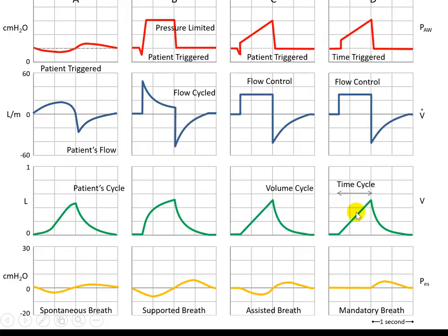The same breath that is started by time delivers the control — the set tidal volume — with a square wave flow. If this breath is instead started by the patient, and the machine delivers the same control volume, we call it an assisted breath. The only difference between an assisted breath and a mandatory breath is the trigger: here it is time triggered, and here it is patient triggered — either flow or pressure. Both mandatory and assisted breaths could be either volume cycled or time cycled.